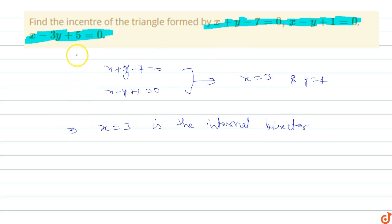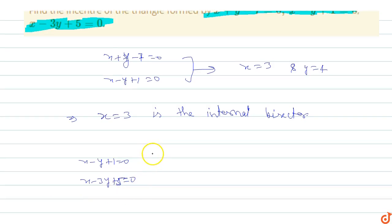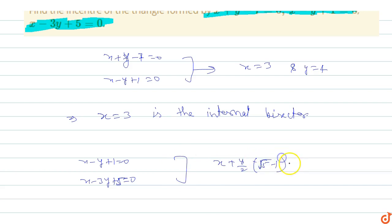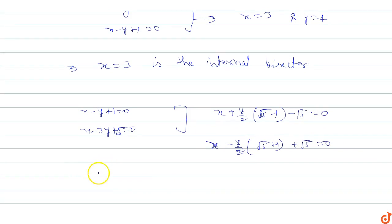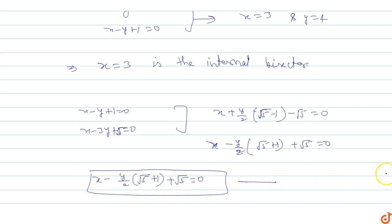Now we have to find the bisector of x - y + 1 = 0 and x - 3y + 5 = 0. The angle bisectors of these two lines are: (x + y) / (2√5) - (1/√5) = 0, and (x - y) / (2√5) + (1/√5) + √5 = 0. The internal bisector of these two lines is x - y / (2√5) + 1/√5 + √5 = 0.